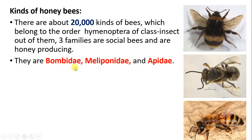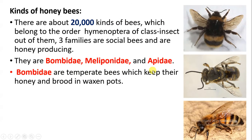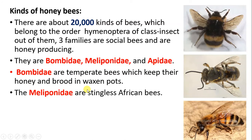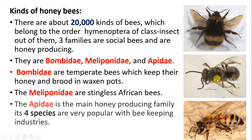There are three honey-producing families: Bombidae, Meliponiidae, and Apidae. Bombidae are temperate bees which keep their honey and brood in wax pots, storing honey and larval-pupal stages there. Meliponiidae are stingless African bees — they do not sting. The third family is Apidae, which is the main honey-producing family.